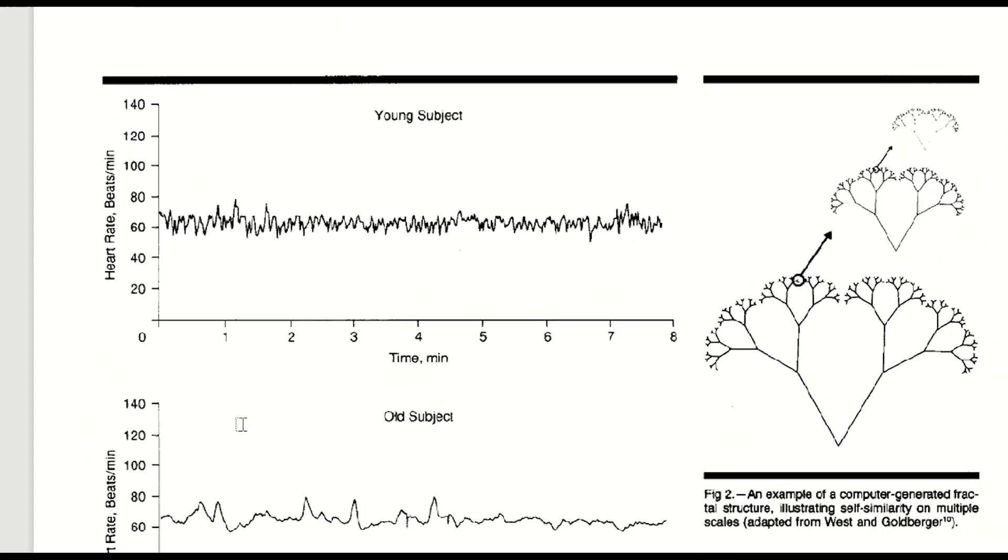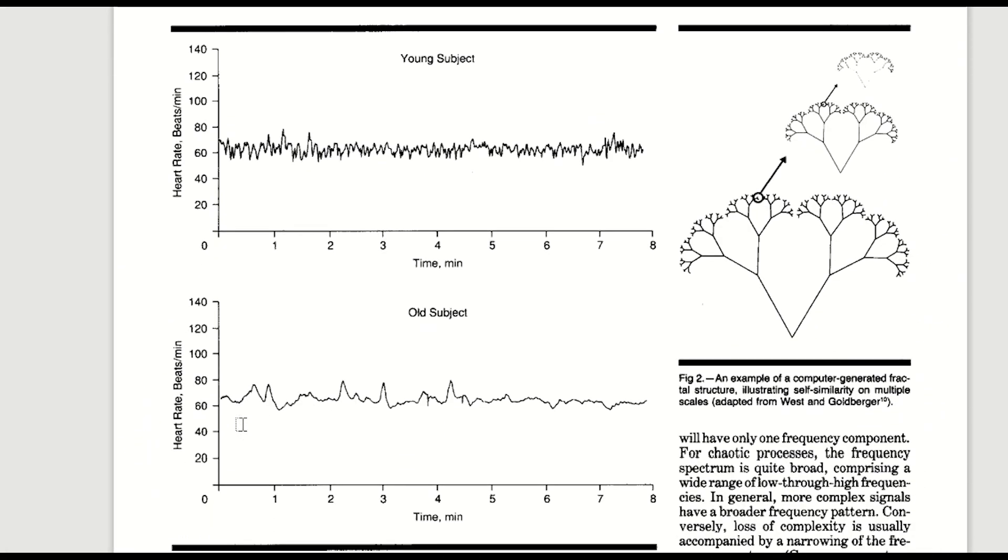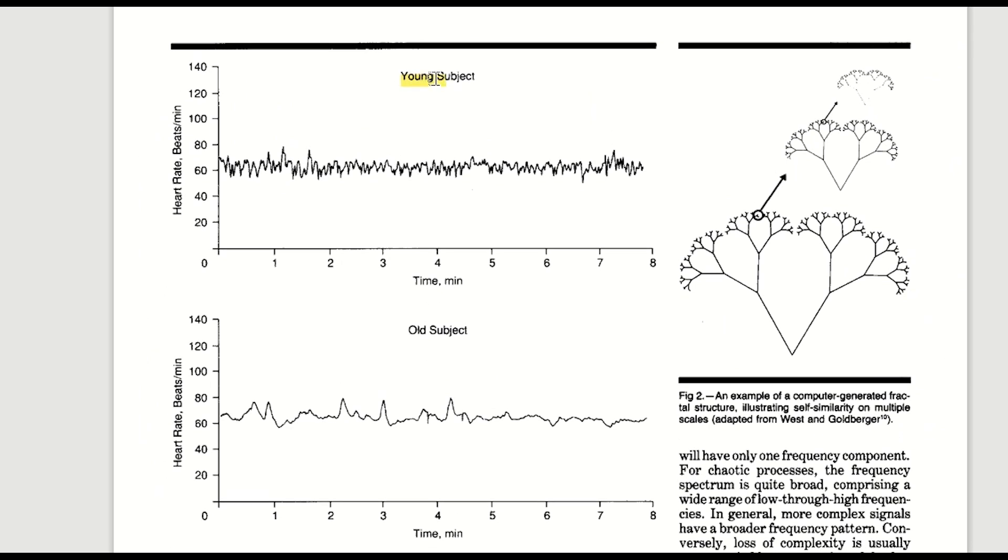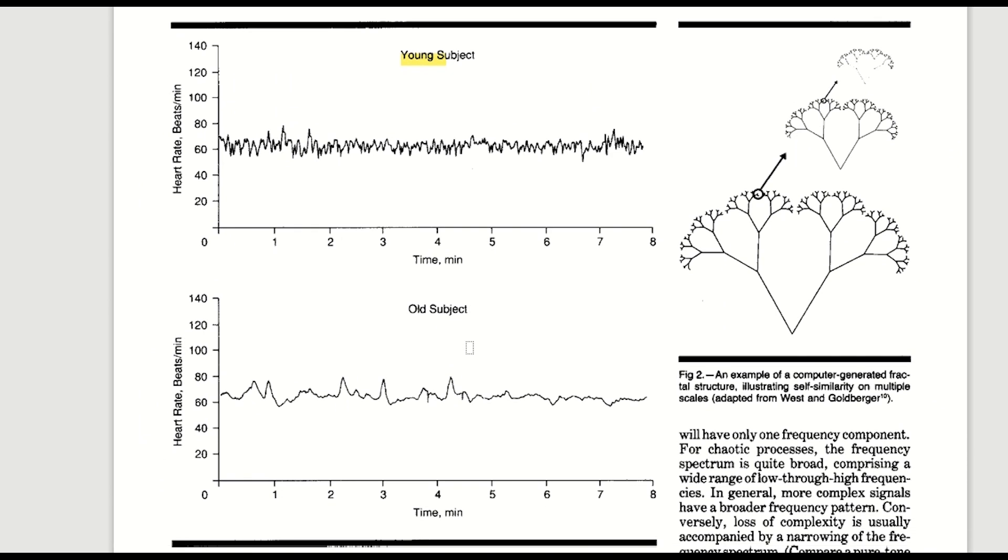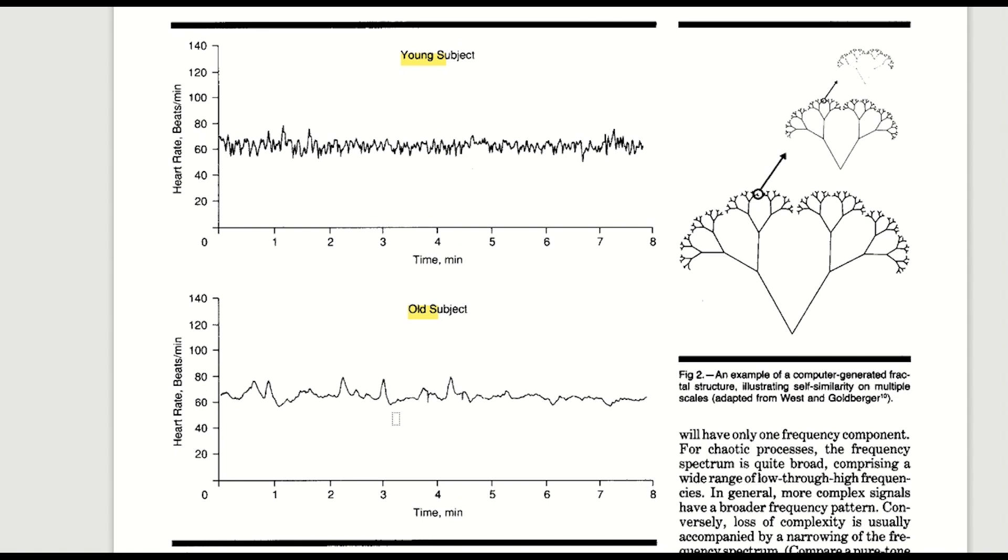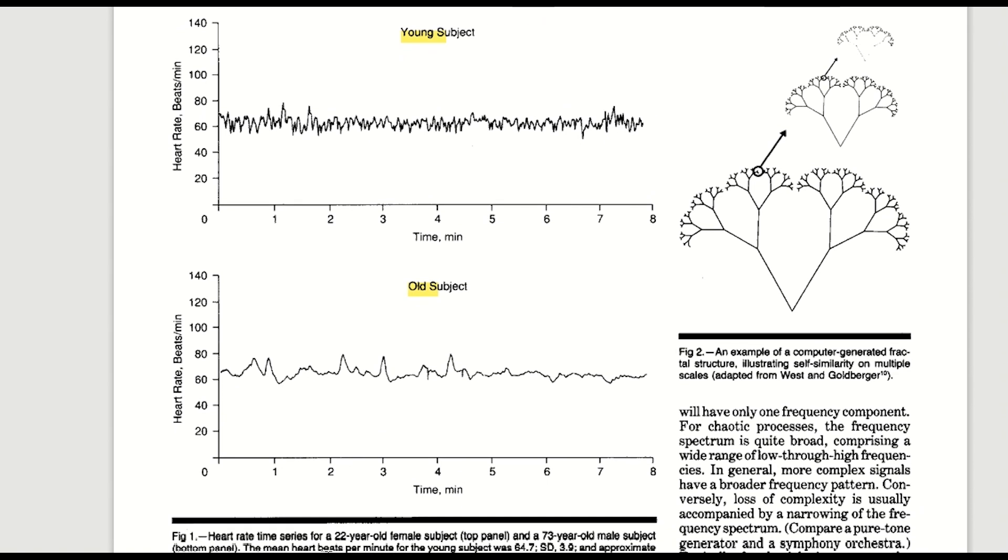Take a look at this first figure. It shows on the upper panel the normal sinus rhythm heartbeat at rest in a healthy 22 year old female subject. The bottom panel is for a 73 year old man. The heart rate for both of them is 64 beats per minute,